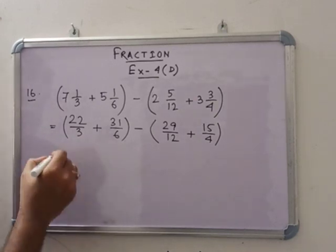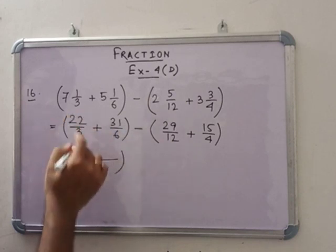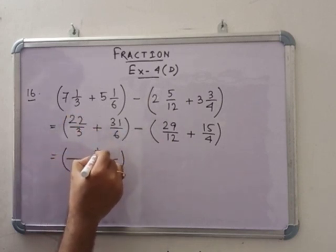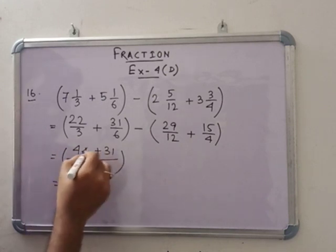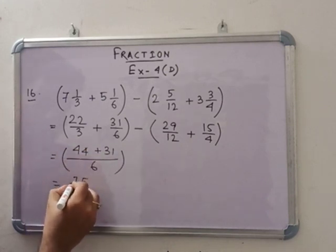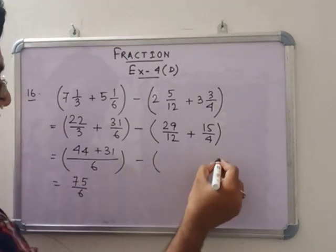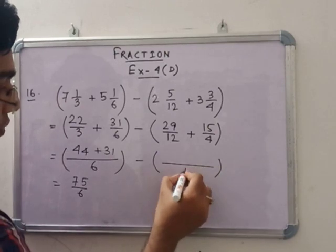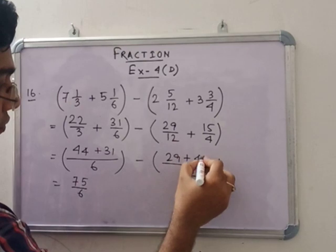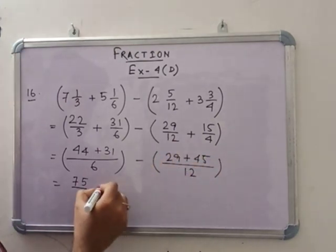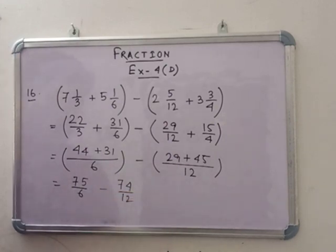So the LCM of 3 and 6 is very easy, 6. So we can write here 6, then 44 plus 31, that means this is 75 by 6. Now minus this calculation: this is 12, so 29 plus 45, this is 74 by 12.